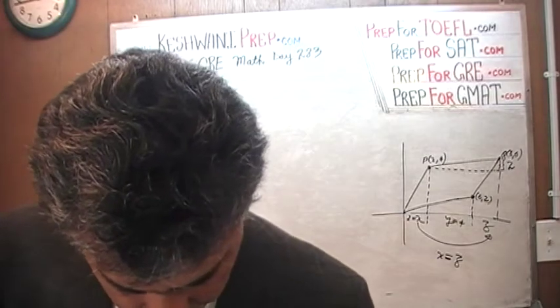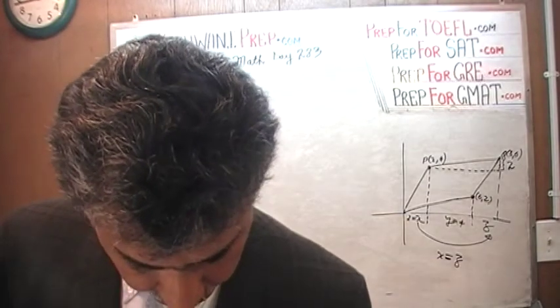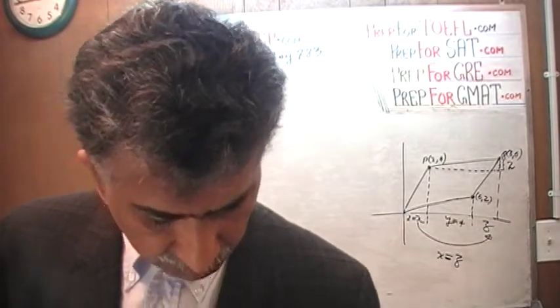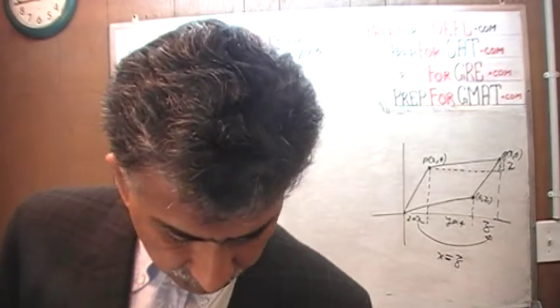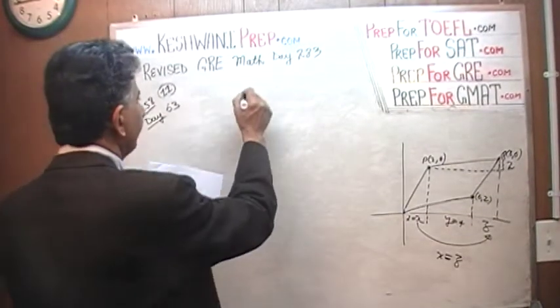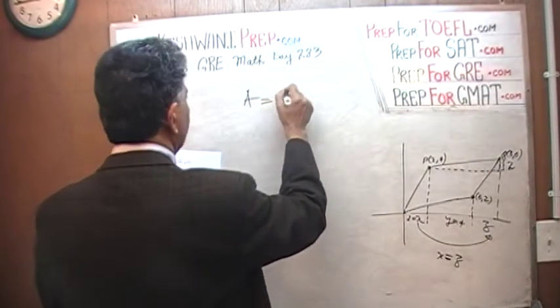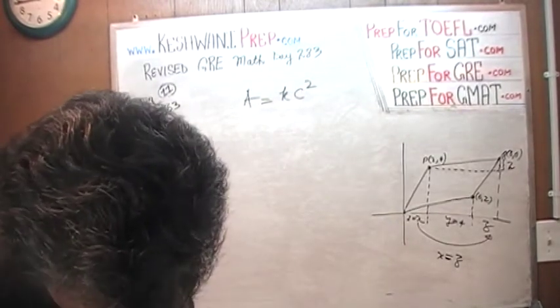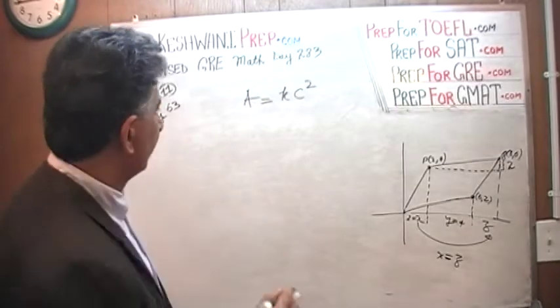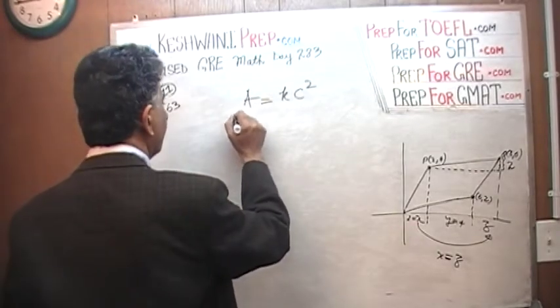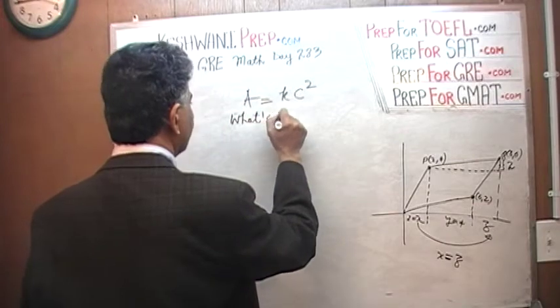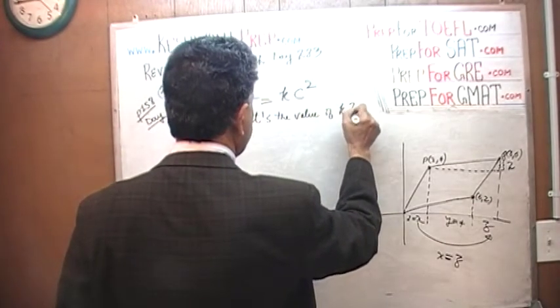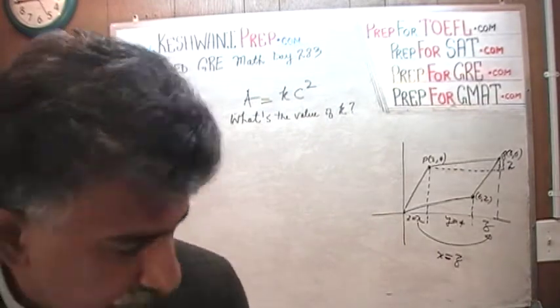And it goes something like this. We are told that the relationship between the area of a circle A and the circumference C is given by this relationship that they gave us here. They tell us that A equals k times c squared. And the question simply is what's the value of k?